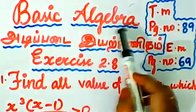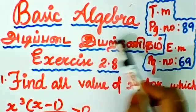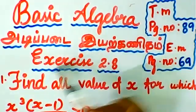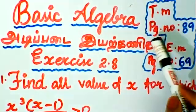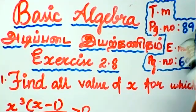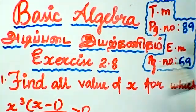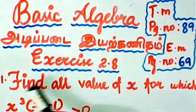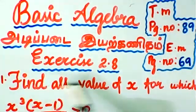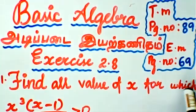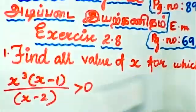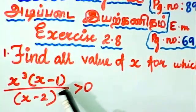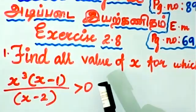11th standard, basic algebra, exercise 2.8. Tamil medium page number 89, English medium page number 69. Sum 1: find all values of x for which x cubed times (x minus 1) divided by (x minus 2) is greater than 0.